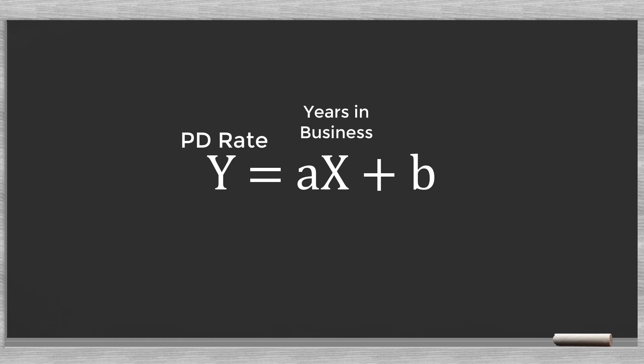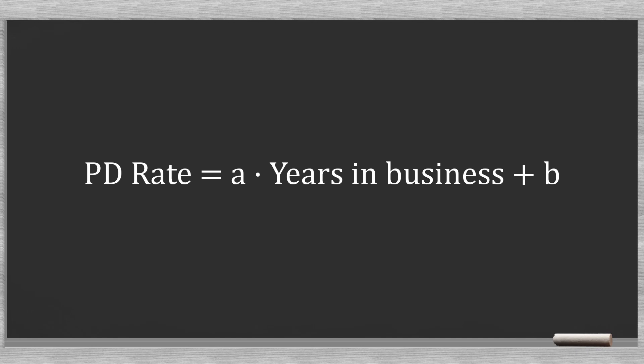The y is the variable that we try to find, in our case the PD rate. We do this with an input x, the years in business. The letter a represents the slope of our line, and b the intercept or constant. The intercept is the value where the line cuts through the y-axis. We can rewrite this general function as follows: PD rate equals a times years in business plus b.